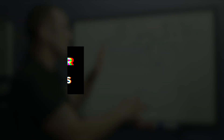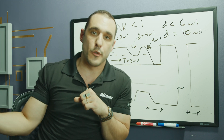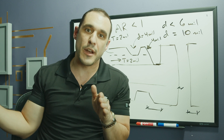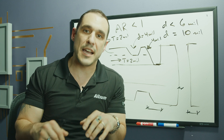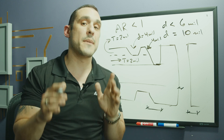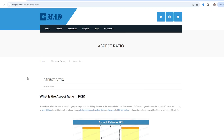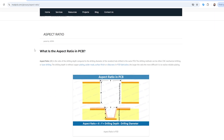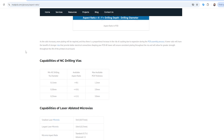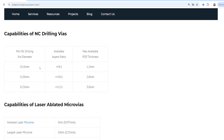Let's look at some typical limitations on laser drilling and mechanical drilling from actual manufacturers — one overseas and one domestic. We're looking at a couple of manufacturer websites for educational purposes only; this is not an endorsement by myself or Altium. Make sure to do your own research and contact your fabricator before starting your design. First, let's look at the MADPCB glossary page, where they define aspect ratio in a PCB — very important because it relates to their capabilities for mechanically drilled and laser drilled vias.